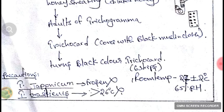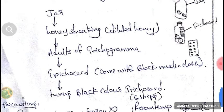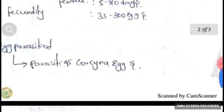Precautions for mass multiplication: For the species Trichogramma japonicum, we should not freeze the eggs, as they are not tolerant to frozen conditions. For Trichogramma brasiliensis, the temperature should not exceed 26 degrees Celsius. Room temperature should always be kept at 27 ± 2 degrees Celsius. Relative humidity should be maintained at 65%.